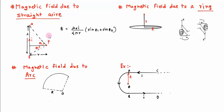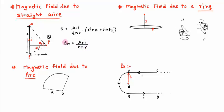If this wire is infinite, then the values of θ₁ and θ₂ become π/2. So sin(π/2) = 1 for both, and the magnetic field simplifies to B = μ₀I / 2πr. This is the magnetic field formula for a straight infinite wire.